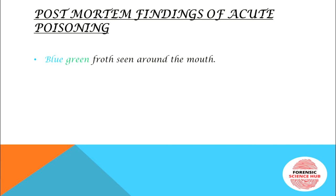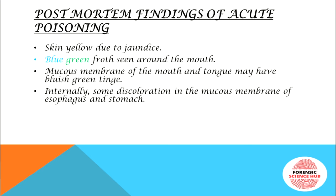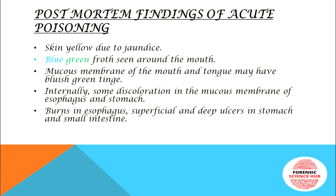Post-mortem findings in acute poisoning include blue-green froth around the mouth, skin is yellow due to jaundice, and the mucous membranes of the mouth and tongue may have a bluish-green tinge. Internally, there is discoloration of the mucous membrane of the esophagus and mouth, burns in the esophagus, and superficial or deep ulcers in the stomach and small intestine. The liver is fatty and soft.